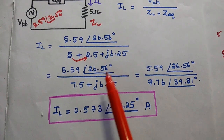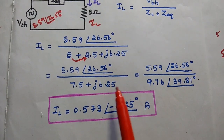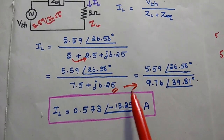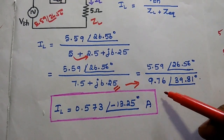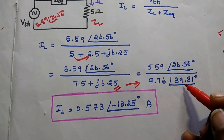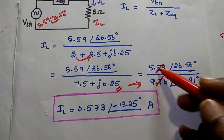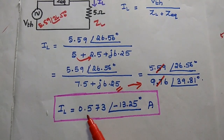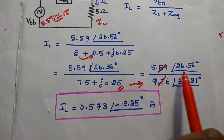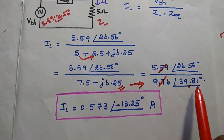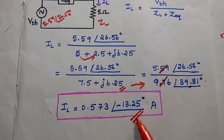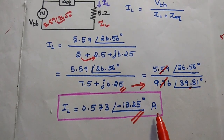We perform the division. Converting the denominator 7.5 plus j6.25 from rectangular to polar using the same procedure, we get 9.76∠39.81°. Dividing the magnitudes: 5.59 divided by 9.76 gives 0.573. For the angle, we subtract the denominator from the numerator: 26.56° minus 39.81° equals minus 13.25°. So the load current IL equals 0.573∠−13.25° Amperes.